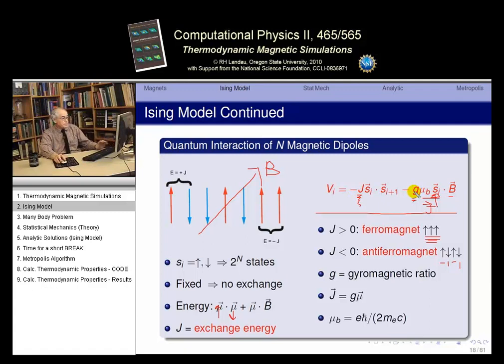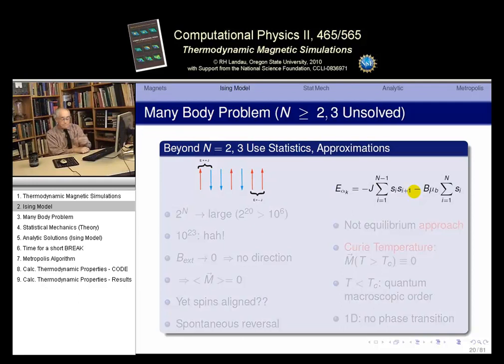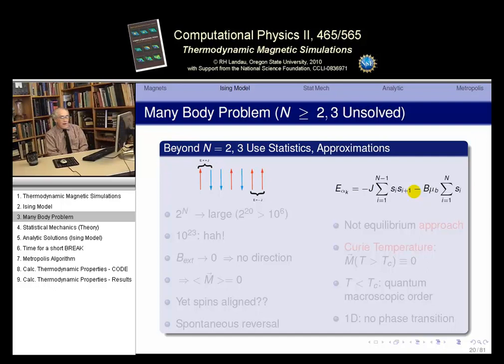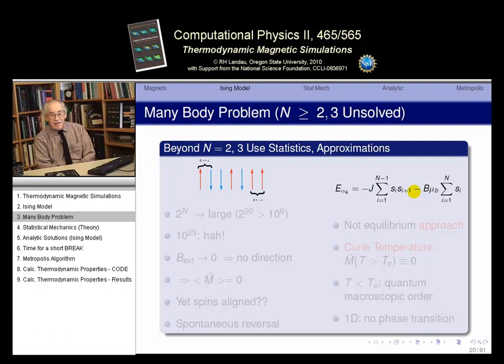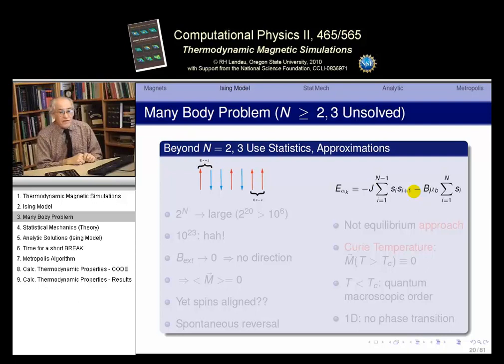How do we solve this problem? Neither physicists nor mathematicians can solve a many-body problem beyond two or three bodies. Two bodies is easy because you can reduce it to one. Three bodies are very hard — only very restricted three-body problems have been solved. A few very restrictive four-body problems are getting solutions now. So how do we solve the many-body problem? We can't. All we can do is approximate it using various techniques.